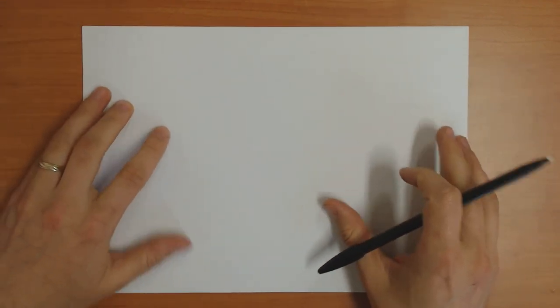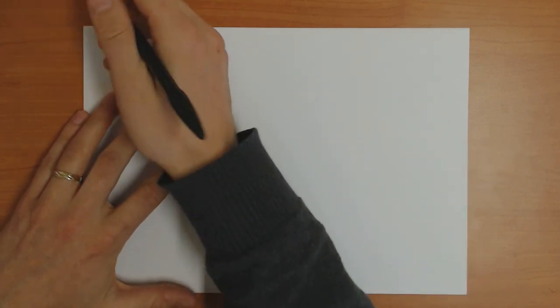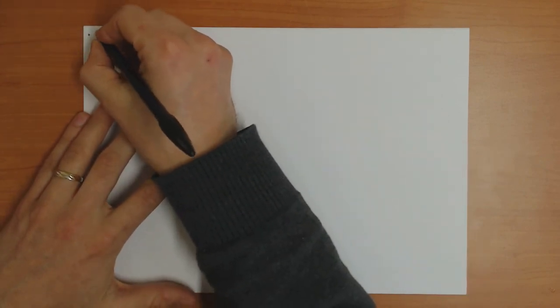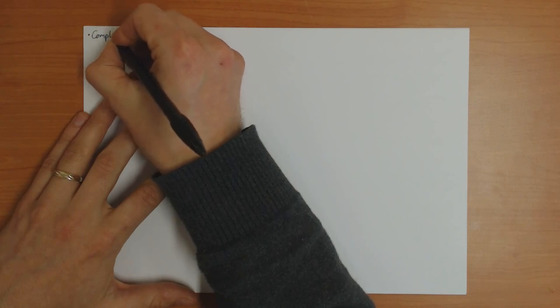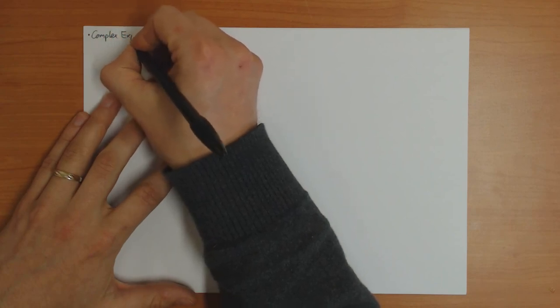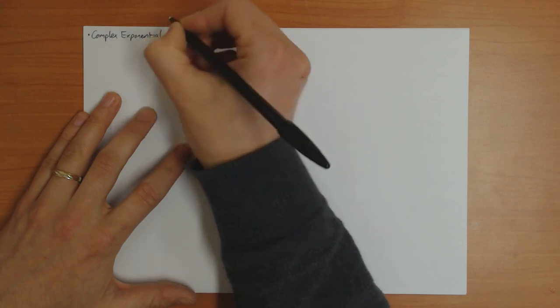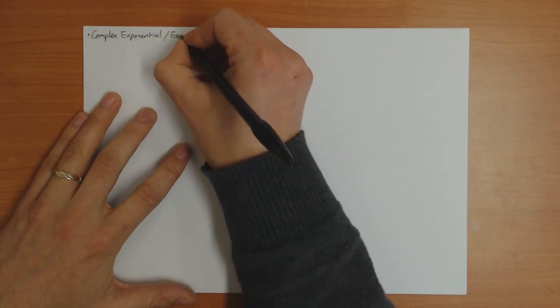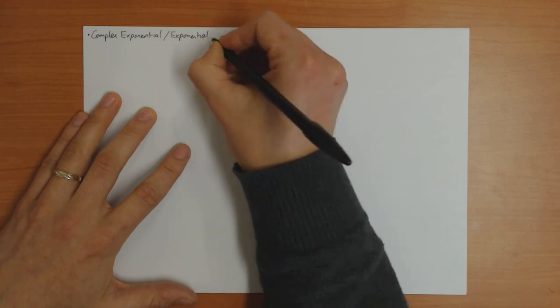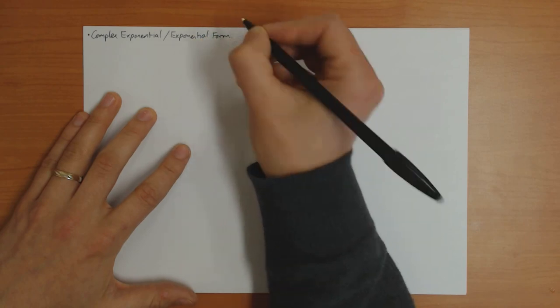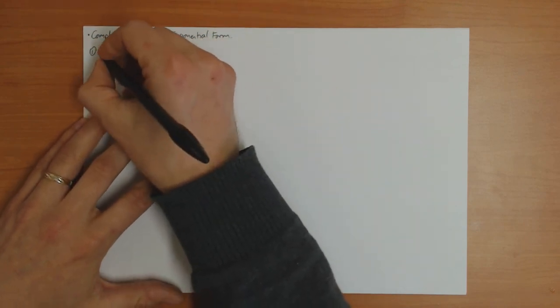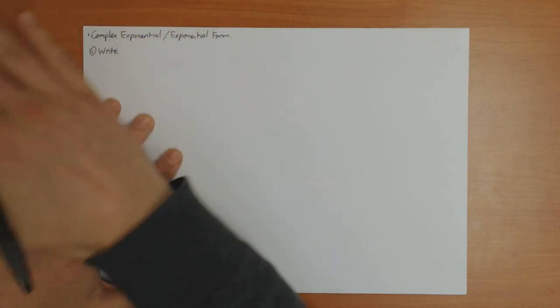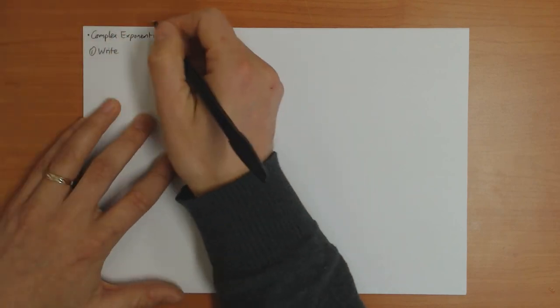So this is the final video this week, and here I'm just going to do a few examples which will help you with the practice sheet, looking at the concepts we've introduced in the other videos. The first thing I'm going to do a few examples of is the complex exponential and exponential form. So first of all, a quite simple one: how do you convert between the standard form of complex numbers and the exponential form?